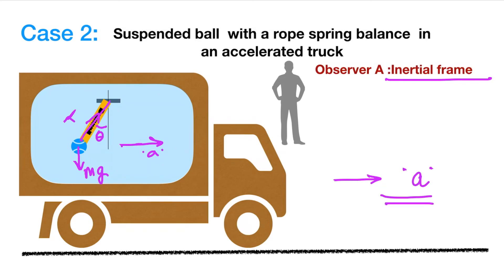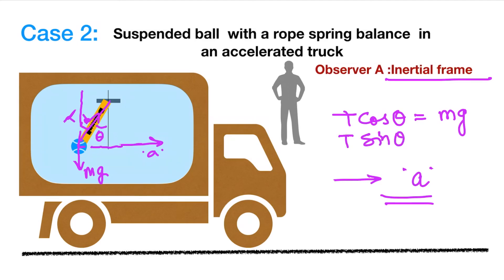As per observer A, the tension T has two components: T cos theta in the vertical direction and T sin theta in the horizontal direction. T cos theta, the vertical component, balances the weight of the ball. T sin theta, the horizontal component, is responsible for the acceleration of the ball — where M is the mass of the ball, so T sin theta equals Ma. This validates Newton's second law of motion.